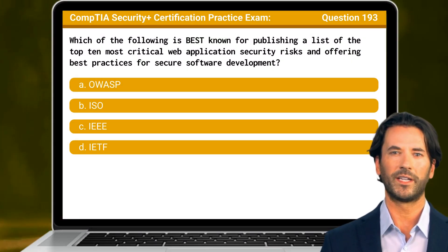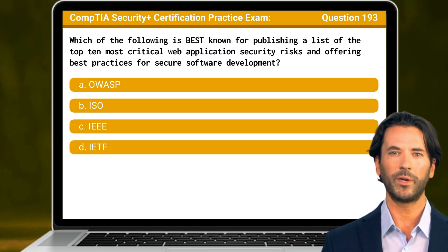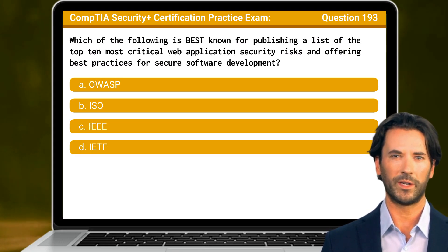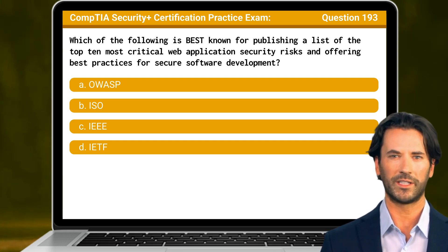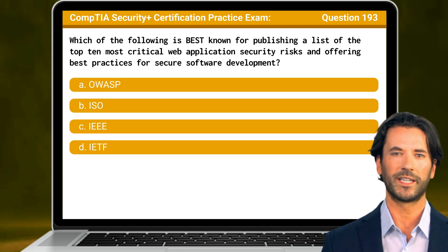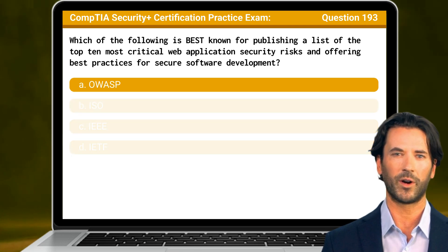Question 193. Which of the following is best known for publishing a list of the top 10 most critical web application security risks and offering best practices for secure software development? The answer is A: OWASP.